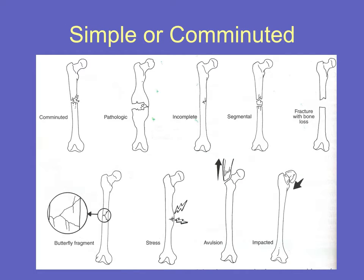We can describe a fracture as comminuted if there are more than two pieces. A pathological fracture is when a physiological force has been put across abnormal bone, resulting in a fracture. Normally, fractures occur because supraphysiological forces have led to a break in a normal bone — such as a fall from a height or a direct impact like a road traffic accident. A pathological fracture occurs because there's something wrong with the bone, which may be something simple like osteoporosis, or it may be a secondary tumour, a primary tumour, or even just a simple cyst within the bone.